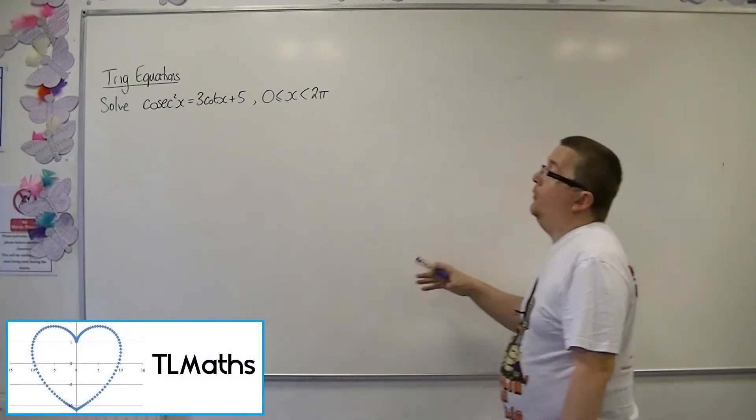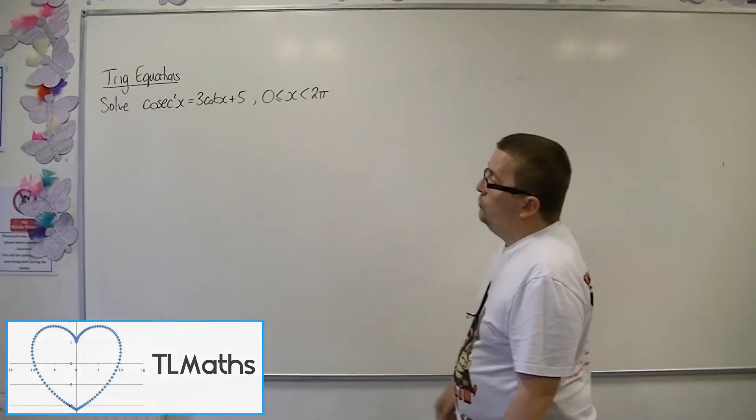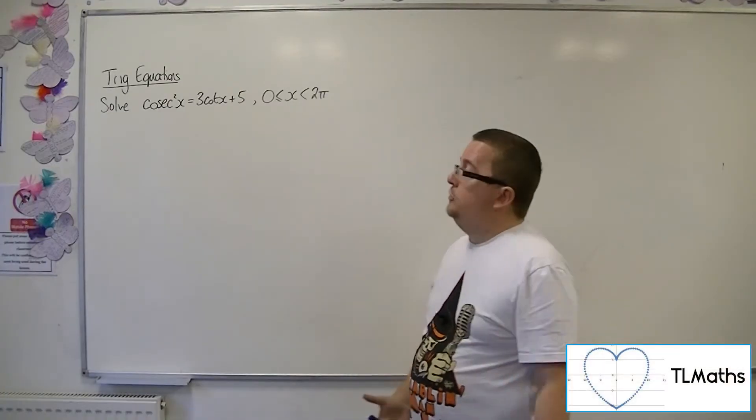Okay, so let's say I want to solve cos x squared equals 3 cot x plus 5 between 0 and 2 pi radians.